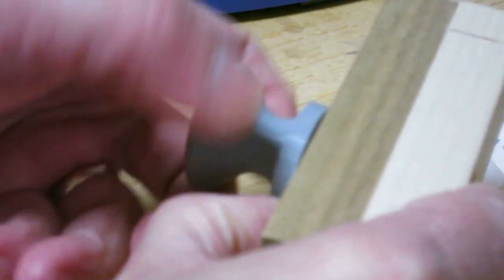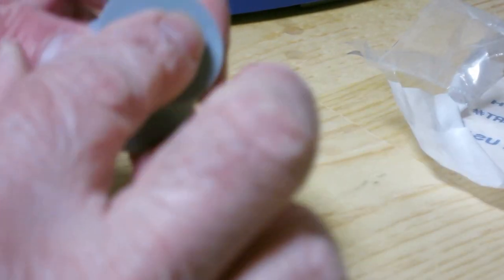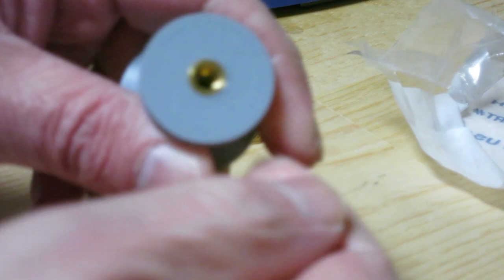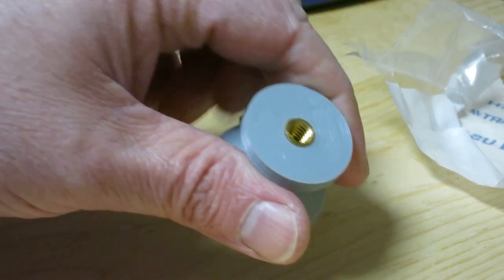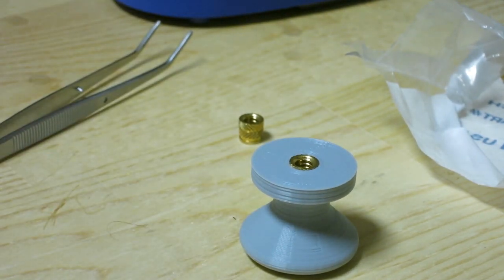Now that's cooled enough, I can take it off this fixture here. It's nice and cool and you can see it's a really nice flat insert. I just need to do that about 20 more times for the other knobs and I'll be set.